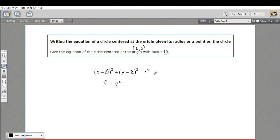And then we just need to fill in our radius for r, so that would be 10 squared, so we would write 100 over here. And that is the equation for a circle centered at the origin with a radius of 10.